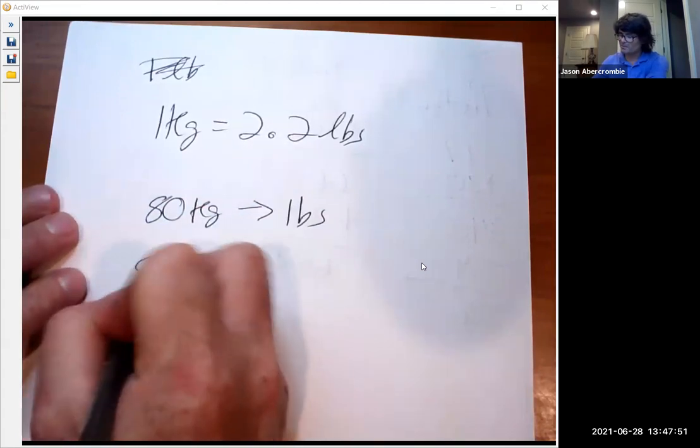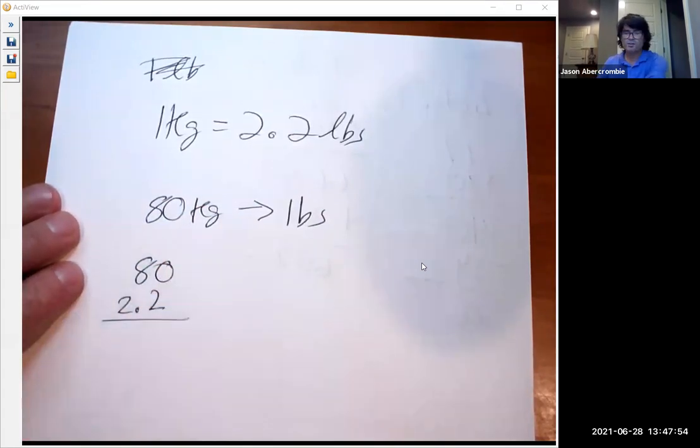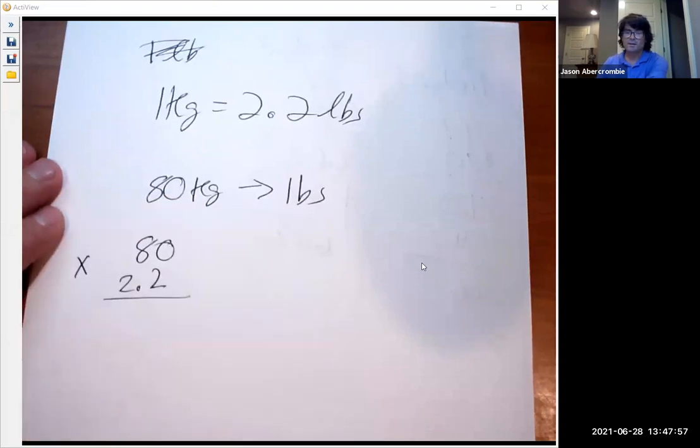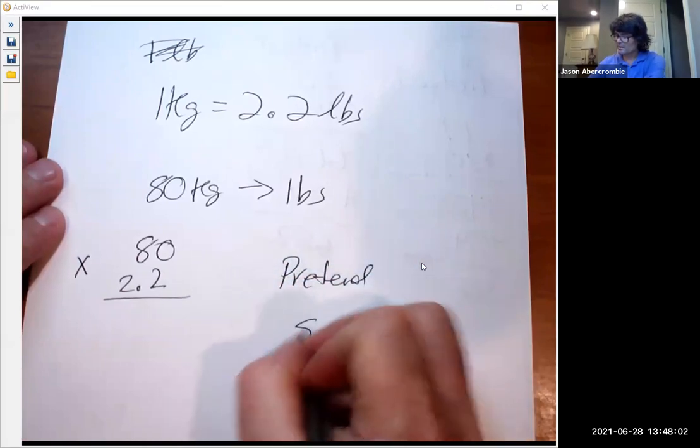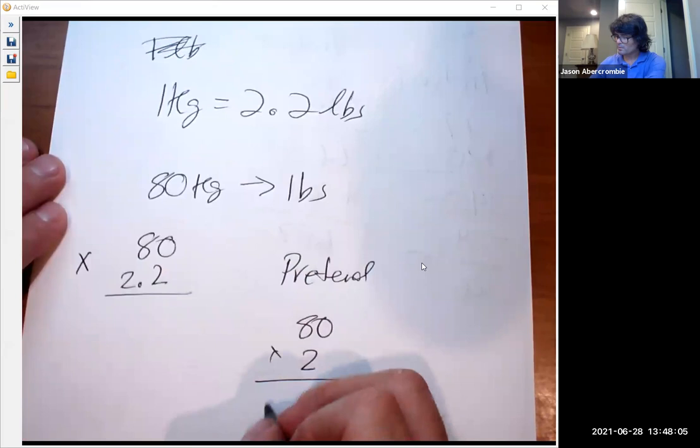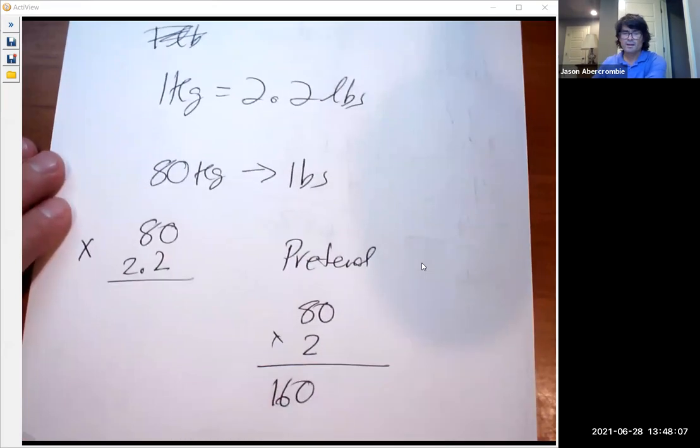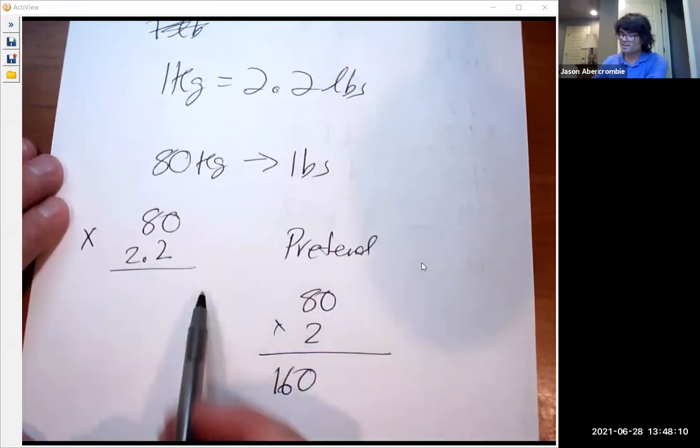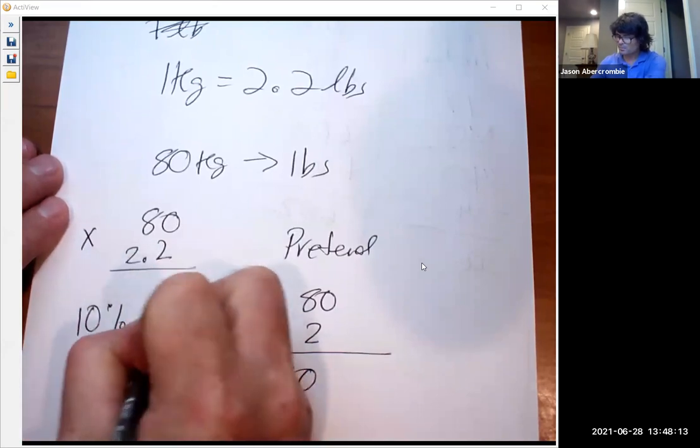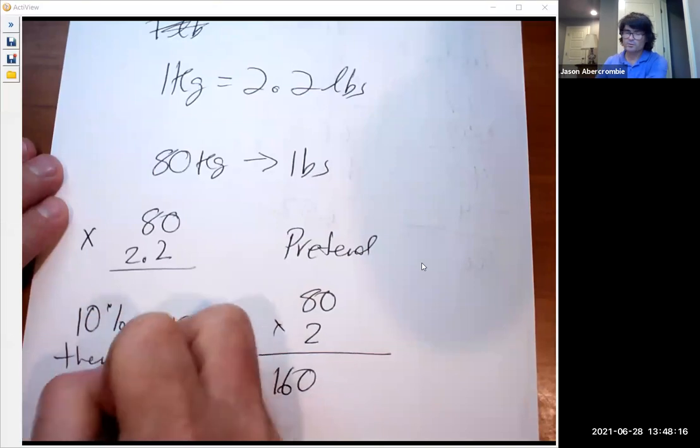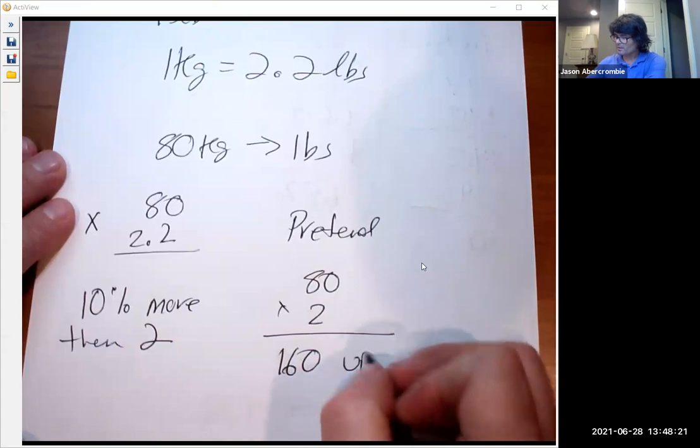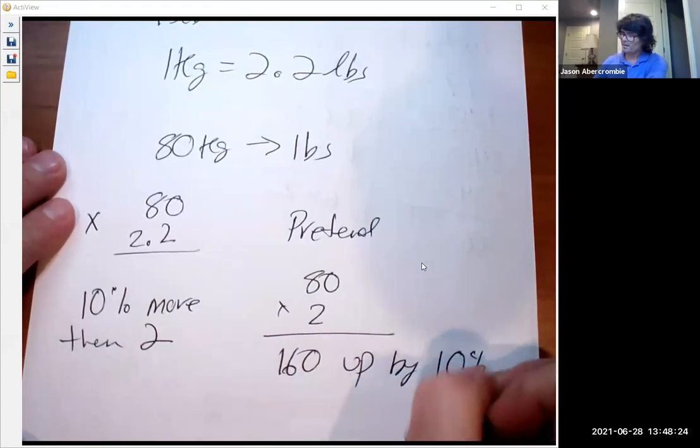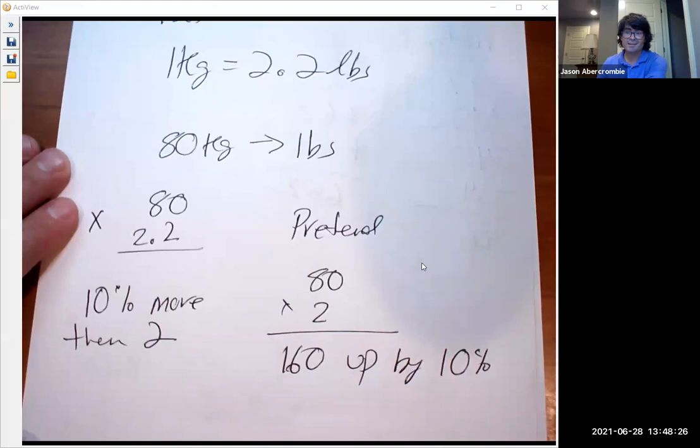So I've got to basically multiply 80 times 2.2 to get pounds. So I'm going to pretend we get 80 times 2. That's 160. And notice how 2.2 is 10 percent more than 2. So what I'm going to do is I'm going to take this 160 and bump it up by 10 percent. Now 10 percent of 160, a tenth of it is 16. So that's going to be 176 pounds.